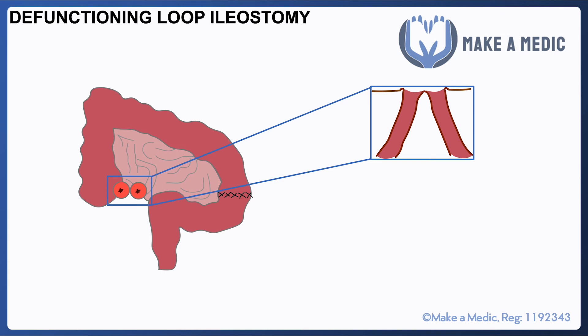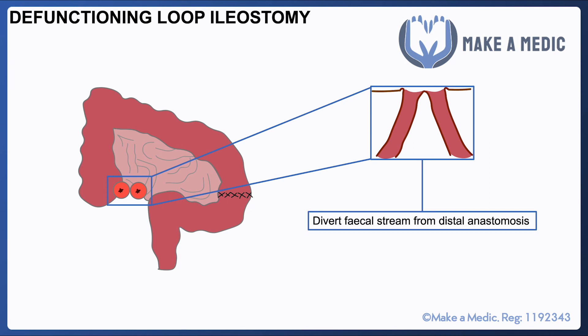The reason a defunctioning loop ileostomy is done is to divert the fecal stream away from a distal anastomosis. Imagine a patient who has had an anterior resection with a primary anastomosis — it takes time for that anastomosis to heal, so you want to give it the best possible chance by preventing feces from reaching it too soon. Essentially, a defunctioning loop ileostomy diverts the fecal stream into a stoma bag until the primary anastomosis has healed. The ileum is used because it heals much better once reconnected than the colon would.